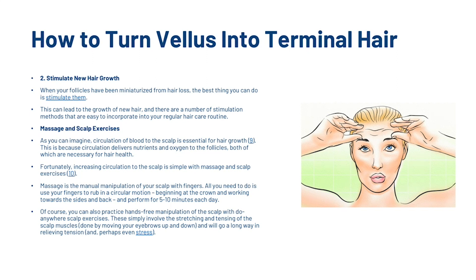The next thing you can do is stimulate new hair growth. When your follicles have been miniaturized from hair loss, the best thing you can do is stimulate them, which can lead to the growth of new hair. There are a number of stimulation methods that are easy to incorporate into your regular hair care routine. The first is doing massage and scalp exercises. Circulation of blood to the scalp is essential for hair growth, as it delivers nutrients and oxygen to the follicles, both of which are necessary for hair health. Increasing circulation is simple with massage — use your fingers to rub in a circular motion, beginning at the crown and working towards the sides and back, for 5-10 minutes each day.